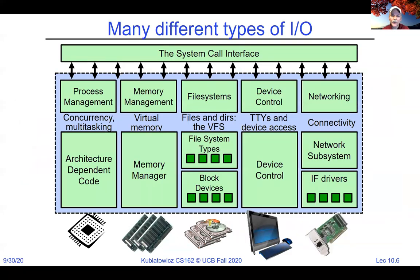There are many different types of I/O, but the Unix/POSIX way treats all of them like file I/O. The system call interface — read, write, open, close — translates into calls across the system call boundary in the kernel. Depending on whether you're accessing a file system, block device storage, device control like TTYs and keyboards, or network sockets, the same open, close, read, write system calls are used.